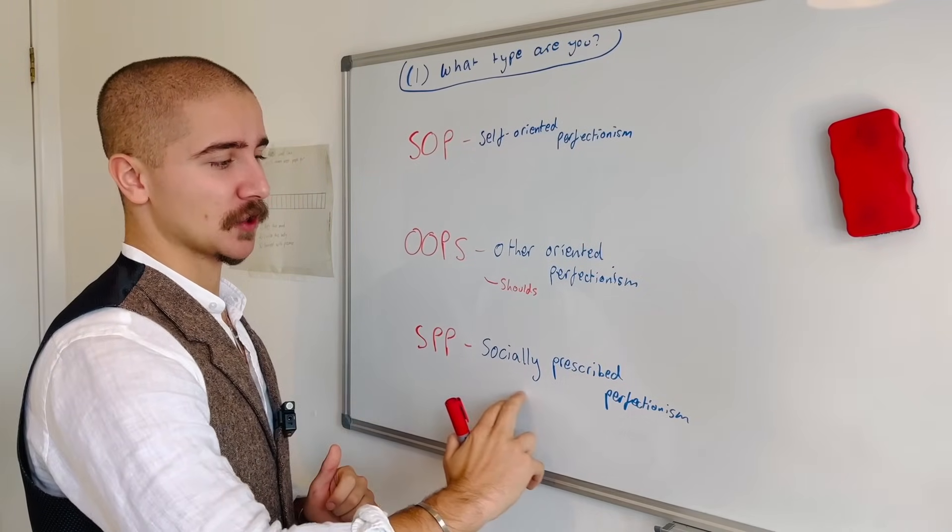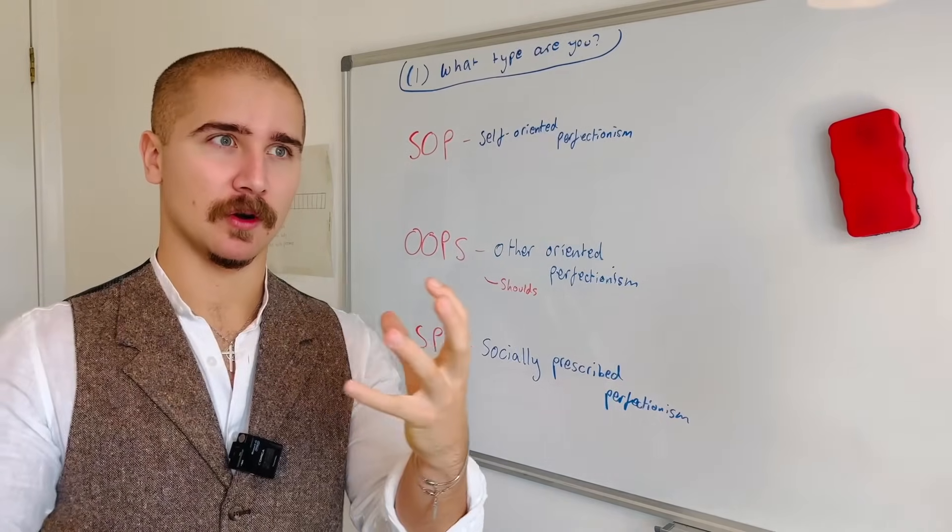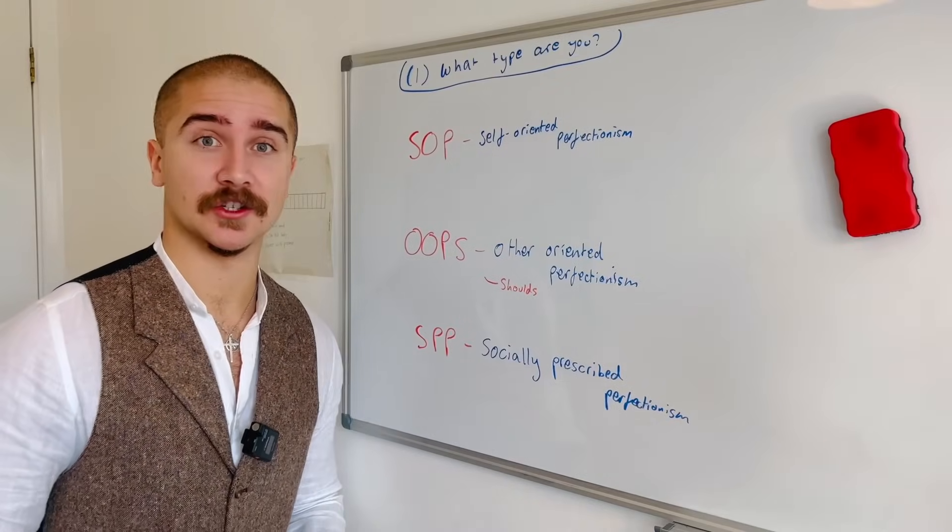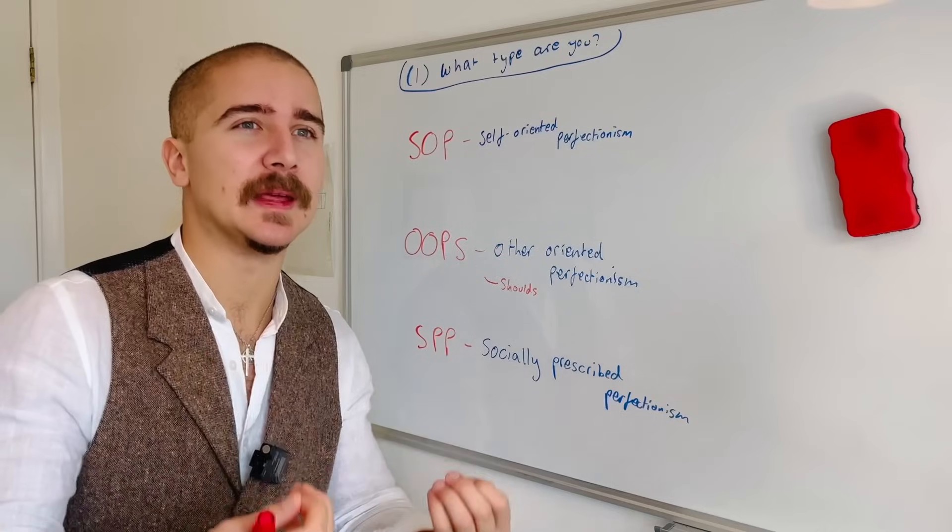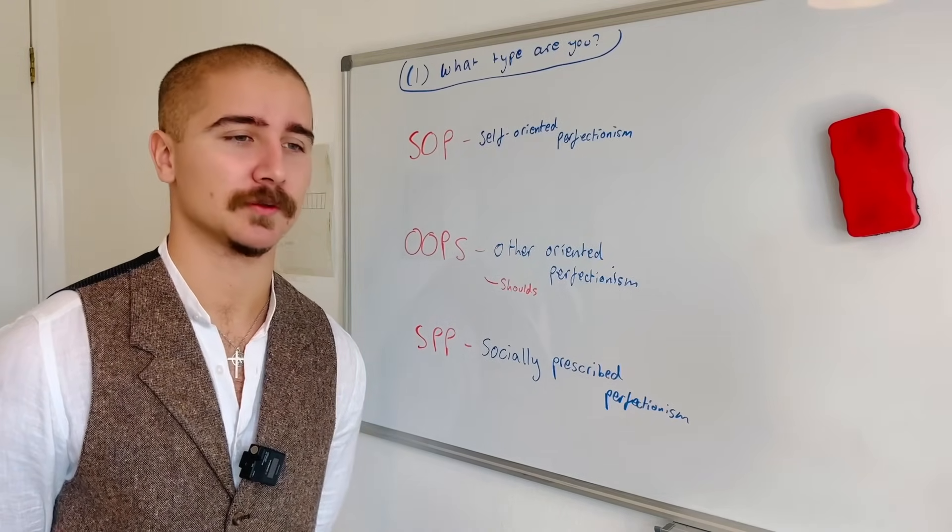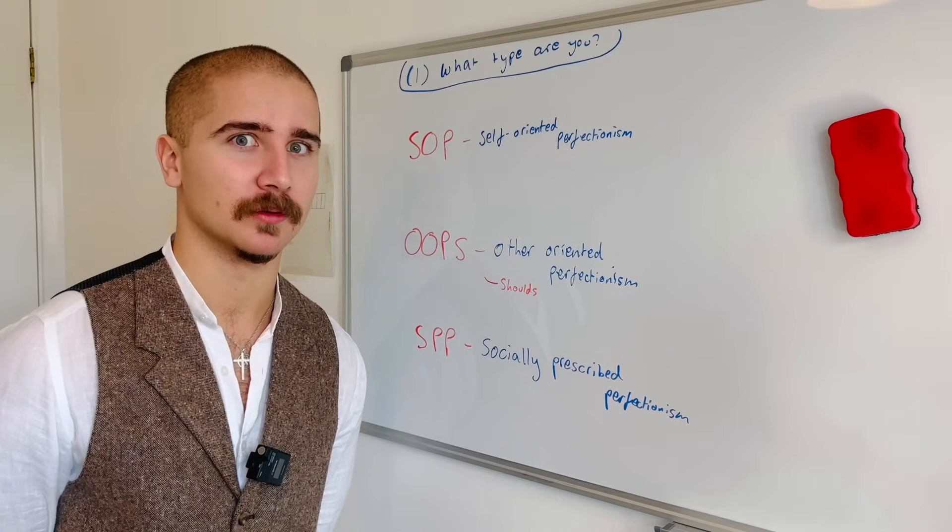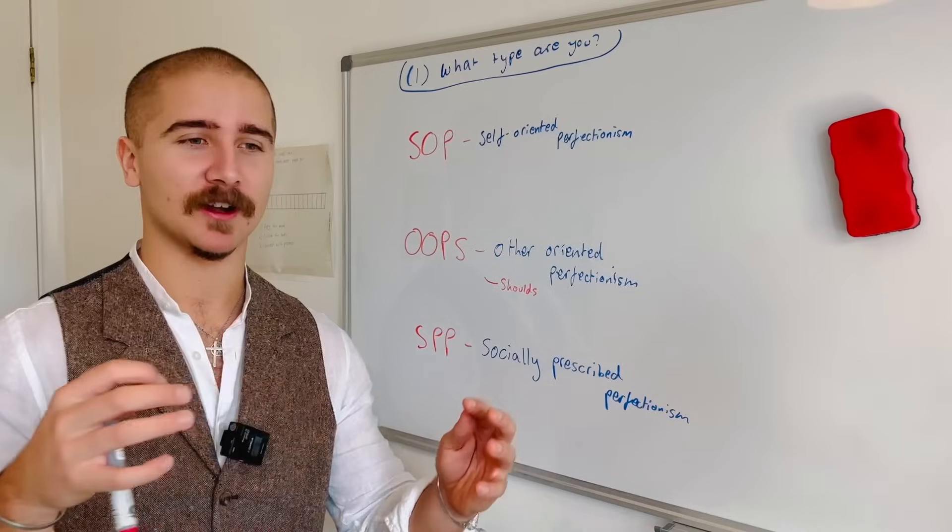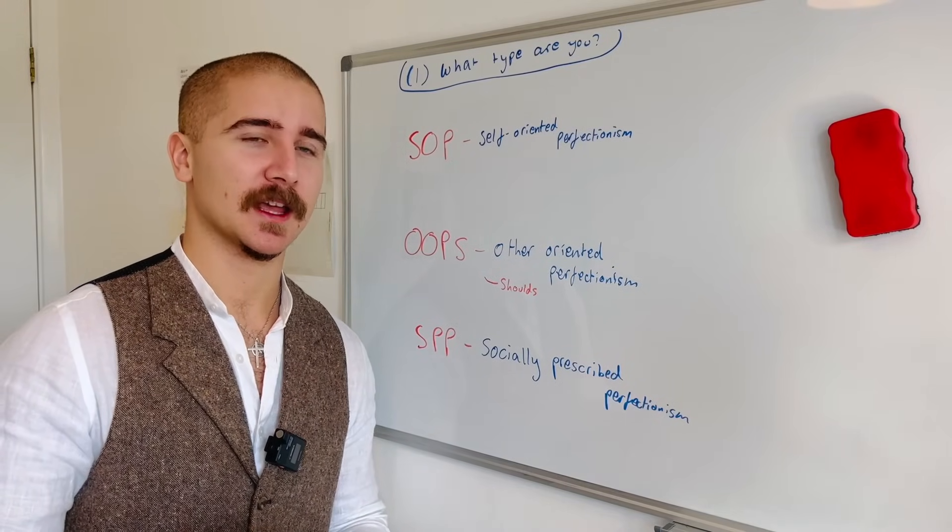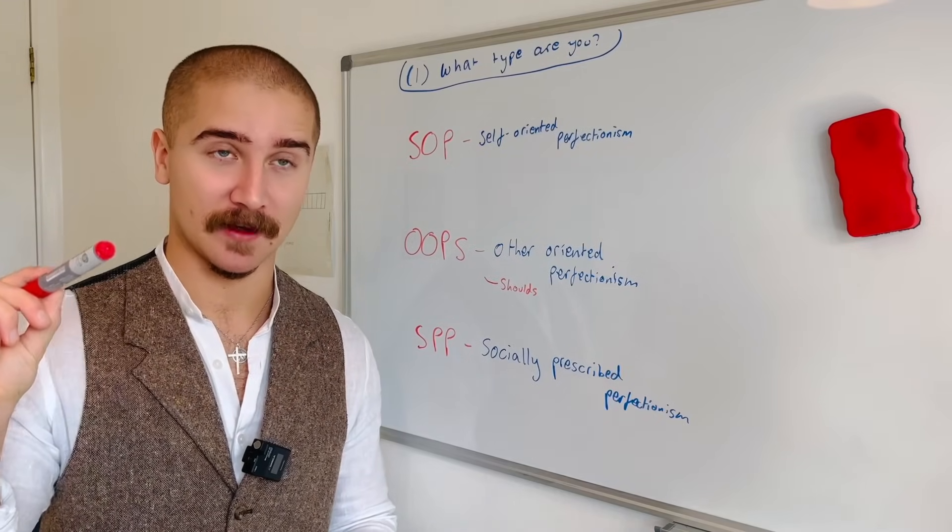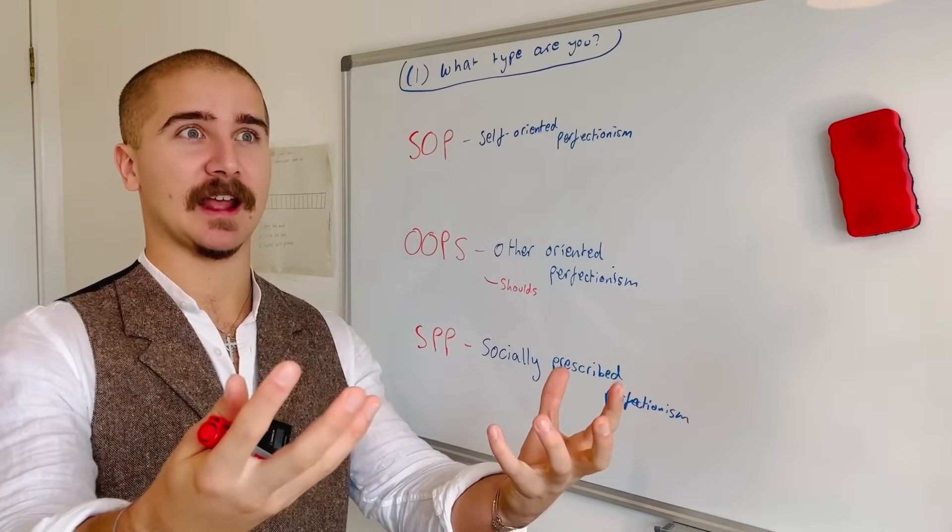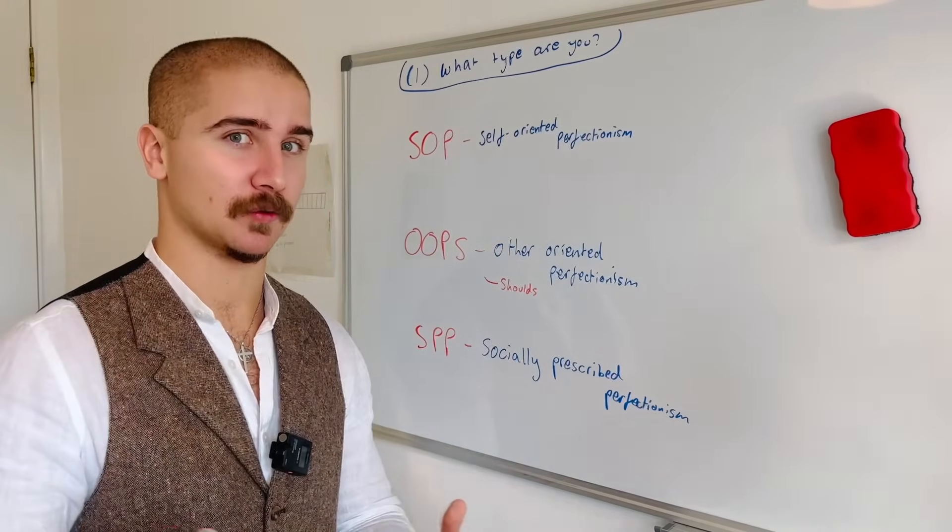And then the SPP is socially prescribed perfectionism. This is where your perfectionism is a result of cultural or societal messages you've adopted. For example with the hustle culture messages, you might believe you should be in a certain place by a certain age. I remember my manager at Costa Coffee was 28 and always miserable, always rushing around because she felt she should have her own business by 26. That's an example of this because she had that expectation fed to her by society and culture.